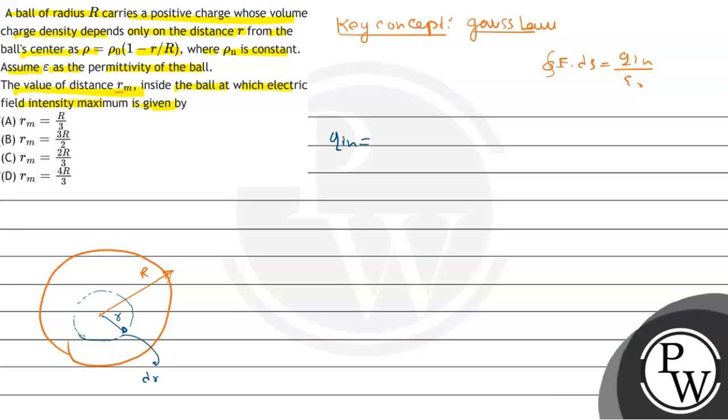So the q inside equals integral of 4πr² dr ρ. This part is the volume of the elementary shell, and this is charge per unit volume. So integral from 0 to r. Therefore ρ equals ρ₀(1 - r/R). We have to put that: integral from 0 to r of 4πr² dr ρ₀(1 - r/R).